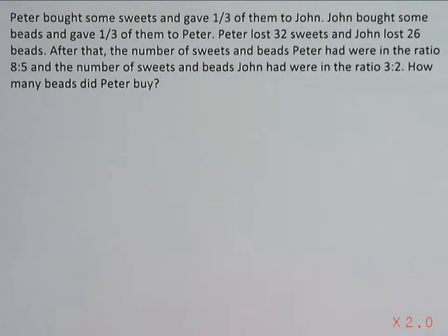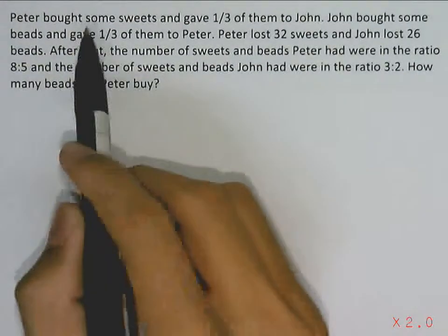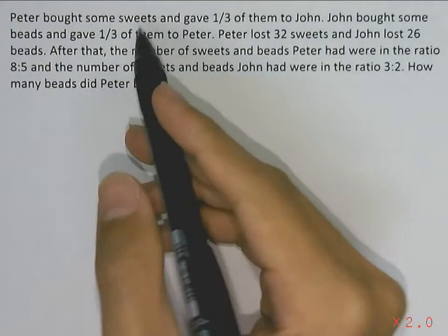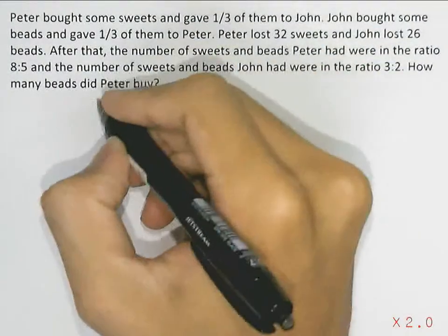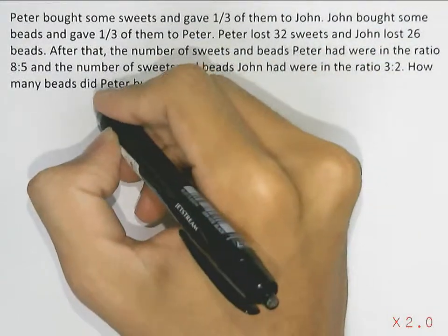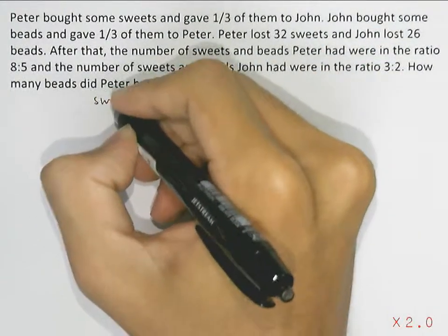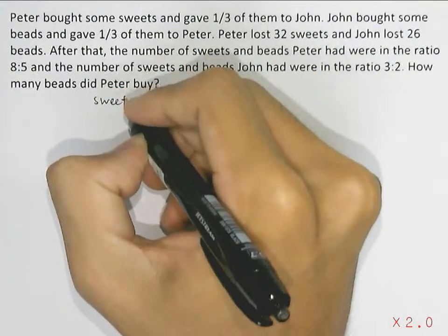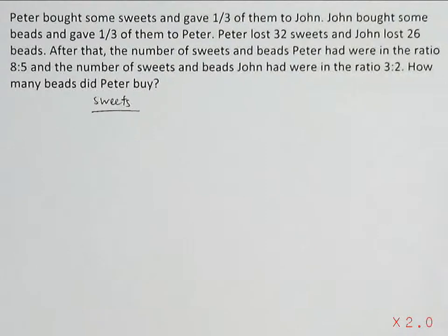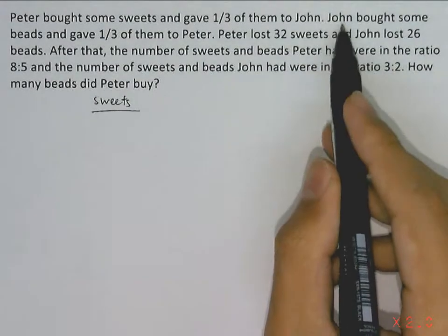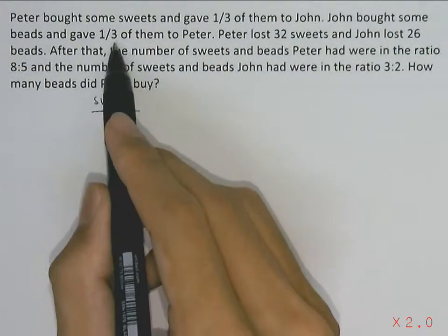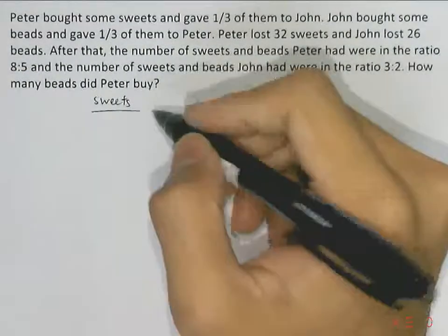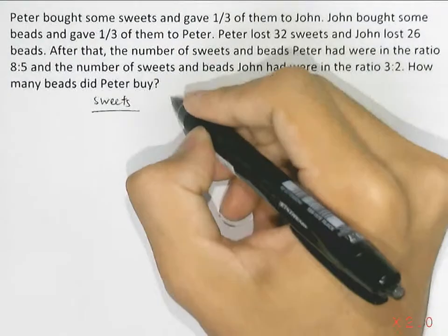The question tells us Peter bought some sweets and gave 1/3 of them to John. Then John bought some beads and gave 1/3 of them to Peter. So we have sweets and beads — Peter bought sweets and John bought beads.